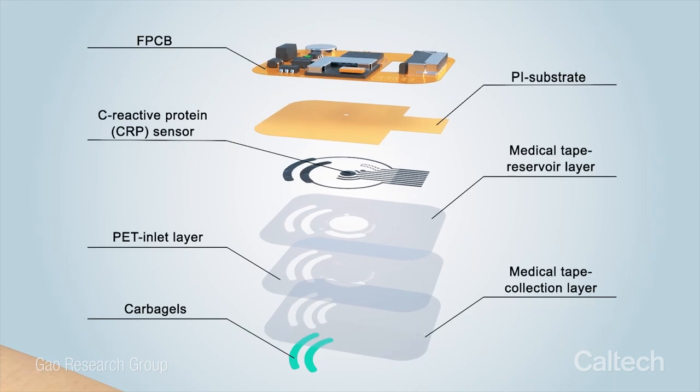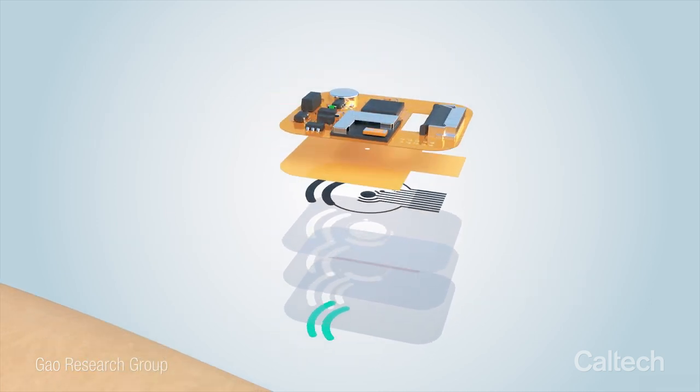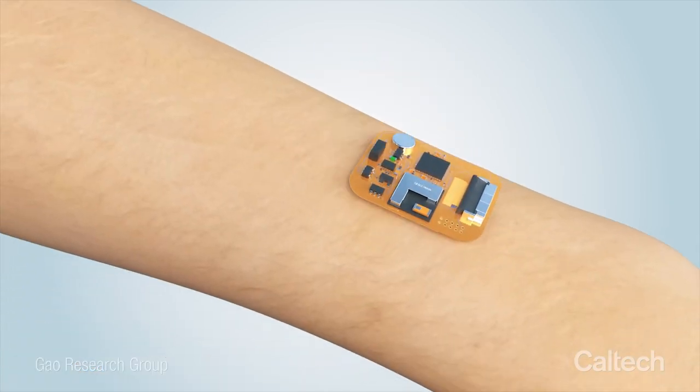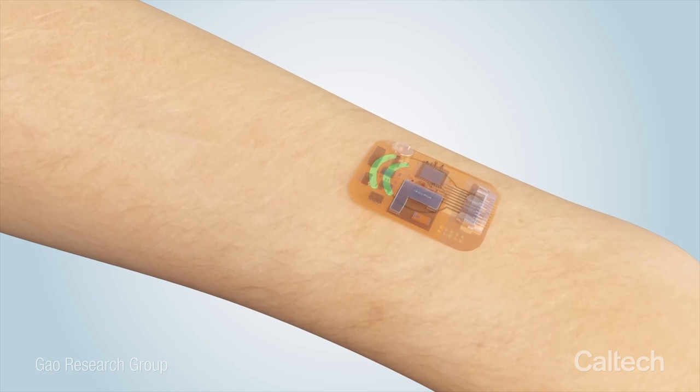The sensor detects a molecule known as the C-reactive protein or CRP. CRP appears at elevated levels in the blood when there is inflammation in the body, making it a useful biomarker.